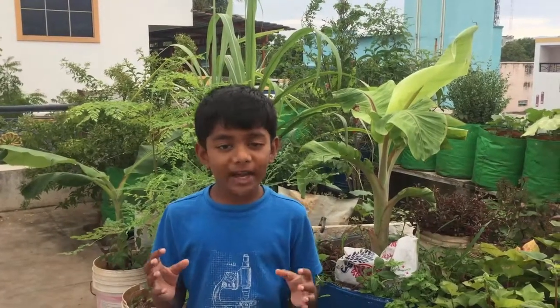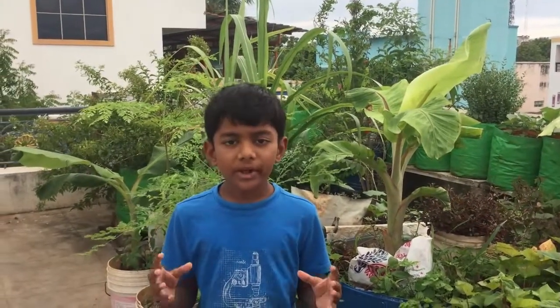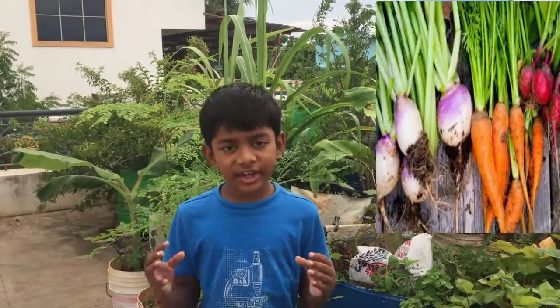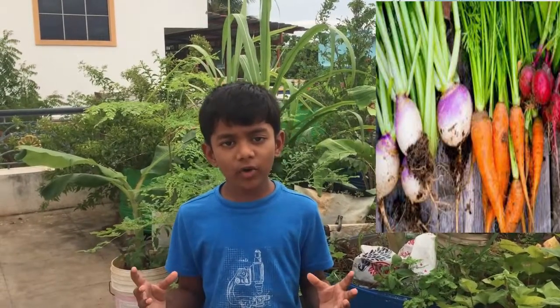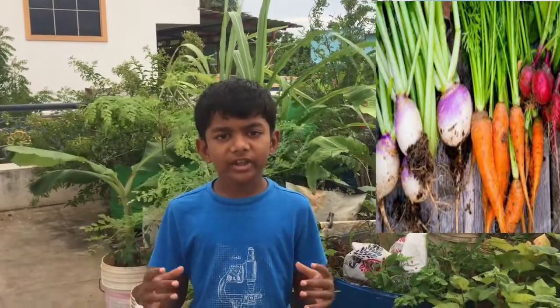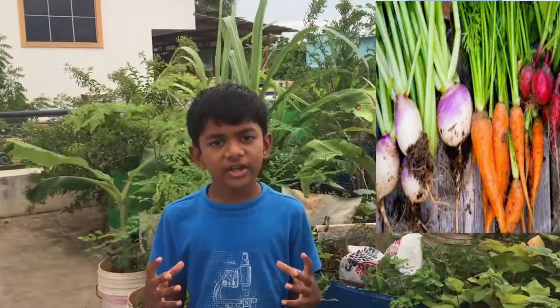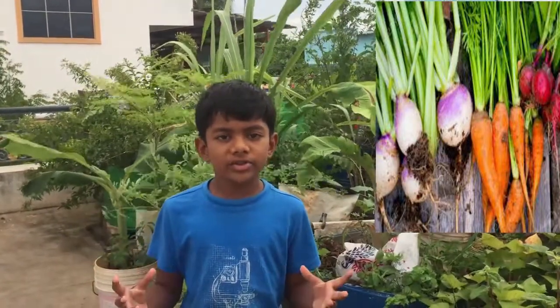Some plants store their excess food in the roots. Plants such as carrots, turnips, and radishes — we eat the fleshy part of the roots.